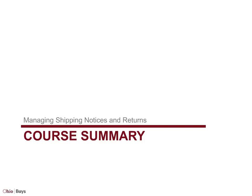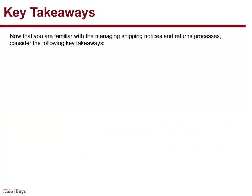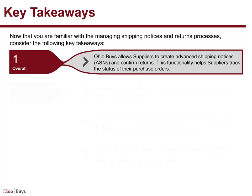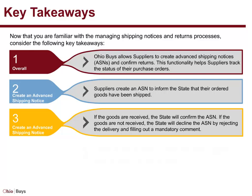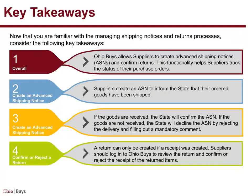Course Summary. Now that you are familiar with the managing shipping notices and returns processes, consider the following key takeaways. OhioBuys allows suppliers to create Advanced Shipping Notices and confirm returns. This functionality helps suppliers track the status of their purchase orders. Suppliers create an ASN to inform the state that their ordered goods have been shipped. If the goods are received, the state will confirm the ASN. If the goods are not received, the state will decline the ASN by rejecting the delivery and filling out a mandatory comment. And, a return can only be created if a receipt was created. Suppliers should log in to OhioBuys to review the return and confirm or reject the receipt of the returned items.